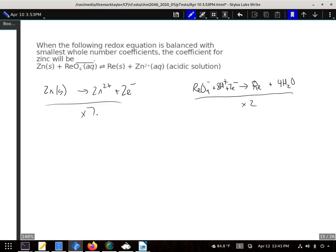So there are seven zinc solids and two of these ReO4 minuses and 16 H pluses going to form seven Zn2 pluses and two Re's and eight waters.